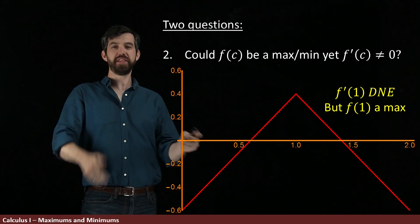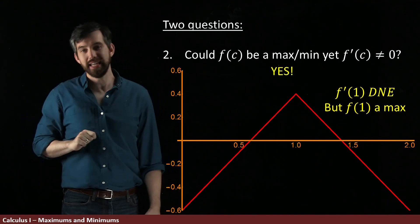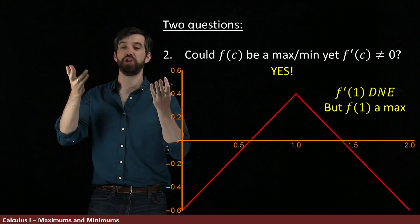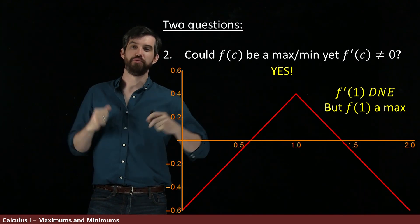And so the answer to this problem is, yes, it is possible to be a maximum even if the derivative is non-zero. It could be a situation like this where the derivative does not exist.